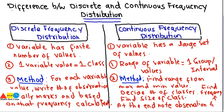This is how discrete frequency distribution differs from continuous frequency distribution. The three basic differences have been explained, and the methods for constructing these frequency distributions were covered in detail in our previous lecture.